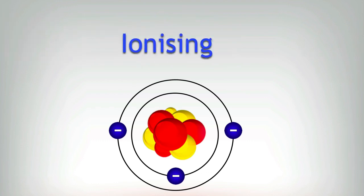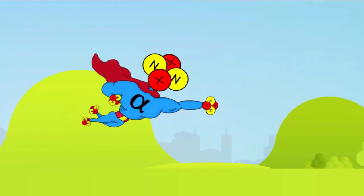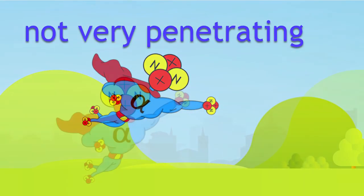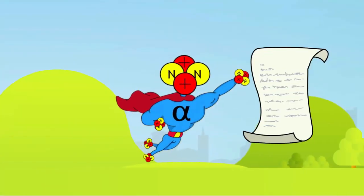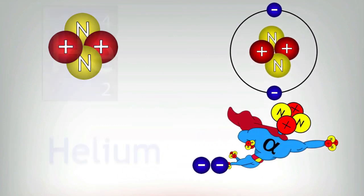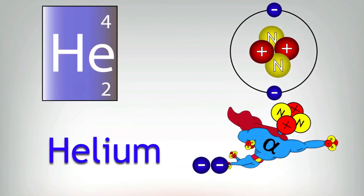However, it also loses energy more quickly than the other particles, so it slows down and eventually stops. This means it's not very penetrating — you can even stop it with tissue paper. Once you stop it, it sits and waits for a couple of electrons. Remember, it's got two protons and two neutrons. When it gathers those electrons, it becomes a helium nucleus, which is pretty harmless. An alpha particle is a helium nucleus waiting for two electrons.